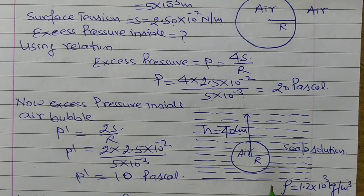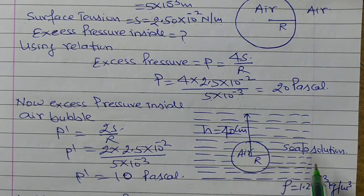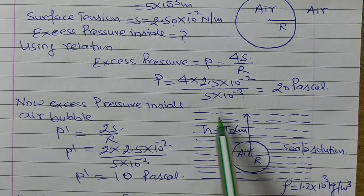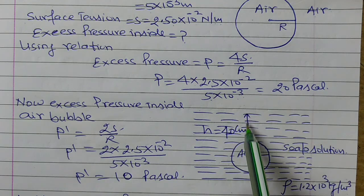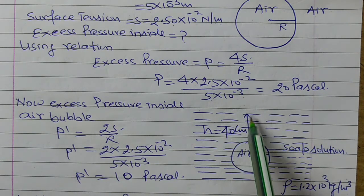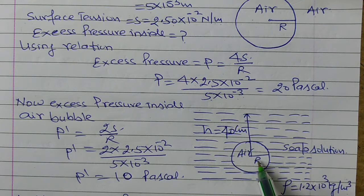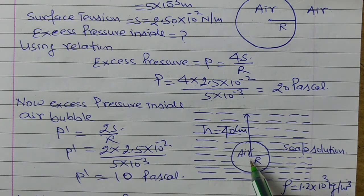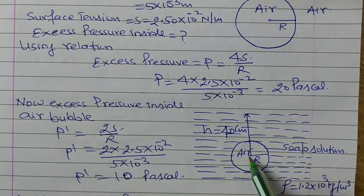Now the question says: a soap bubble of the same dimensions is inside the soap solution at a depth of 40 cm. Same dimensions means the radius is the same — 5 mm, i.e. 5×10⁻³ m. So we need to find the total pressure inside it.